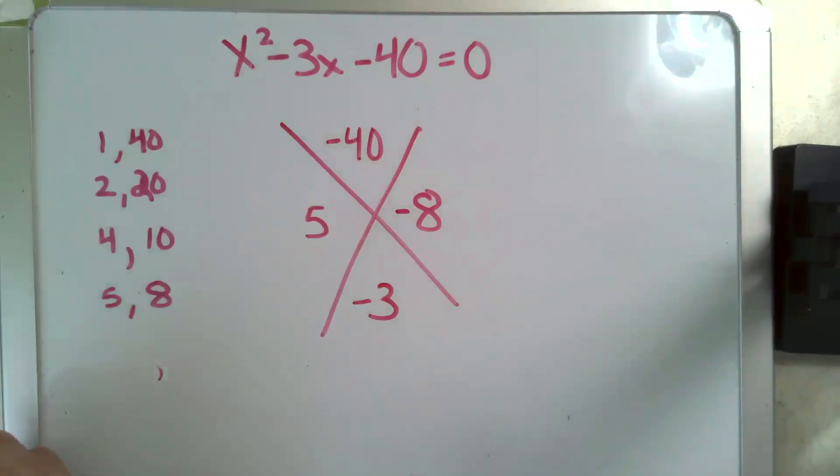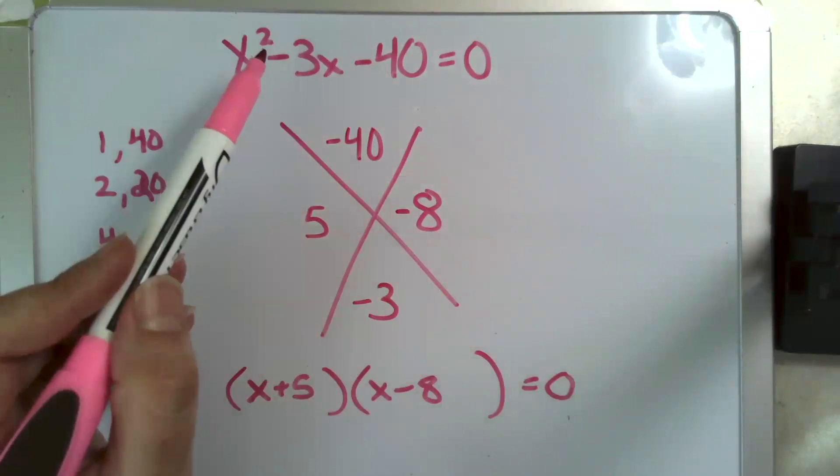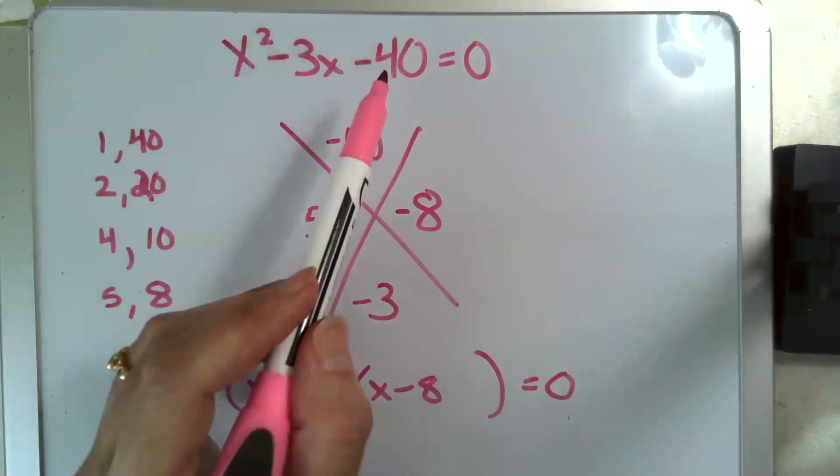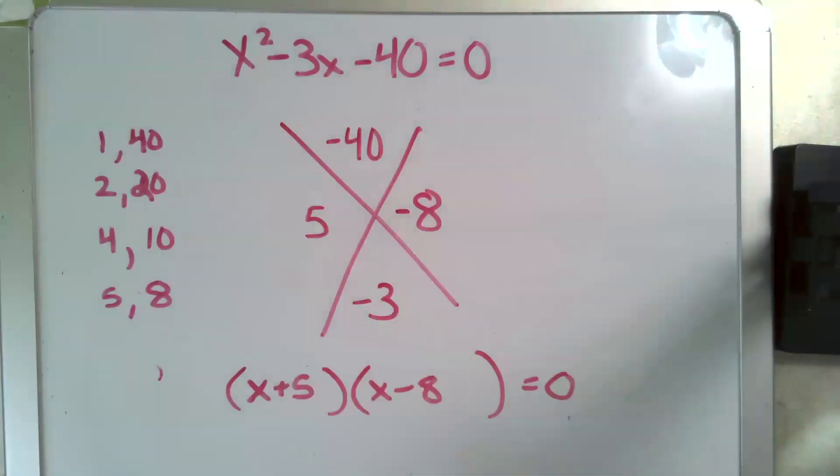But if I were to go negative 3 squared minus 4 times 1 times negative 40, I would get the perfect square, 169, which is 13 squared. So, once again, to summarize, b squared minus 4ac is my discriminant.